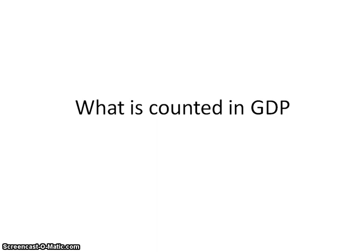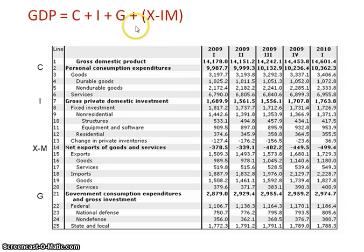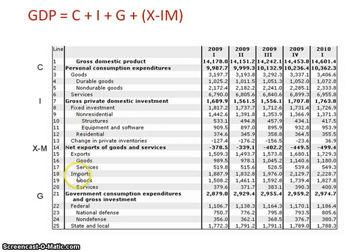We'll also look at the formula for how to calculate real GDP. When looking at what is counted in GDP, the expenditures approach — C plus I plus G plus exports minus imports, or XN — is really important. The different components are consumption, investment, government spending, and net exports, and you can see here the list of different things that fall into each.